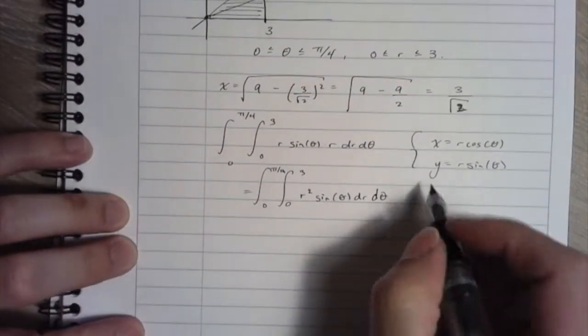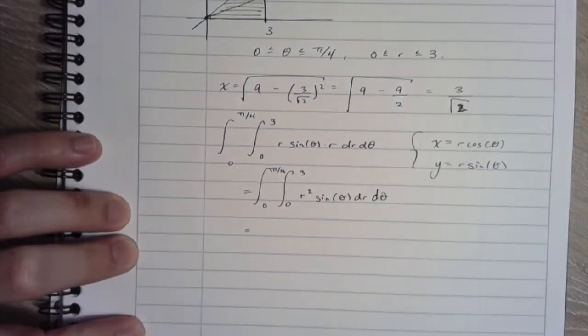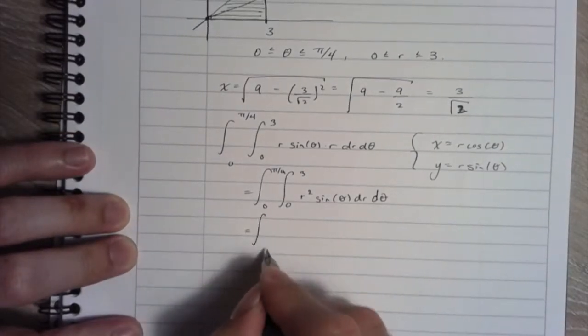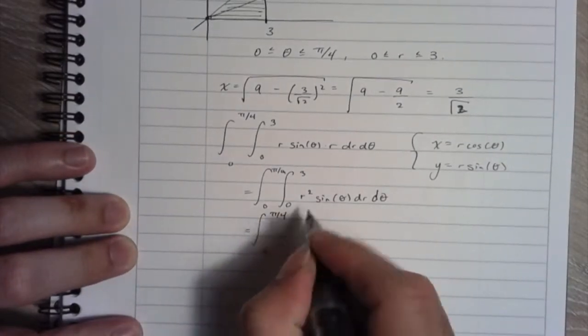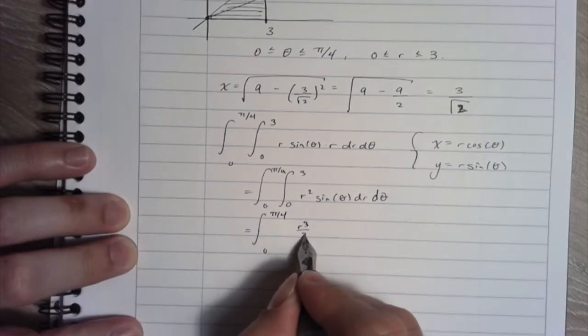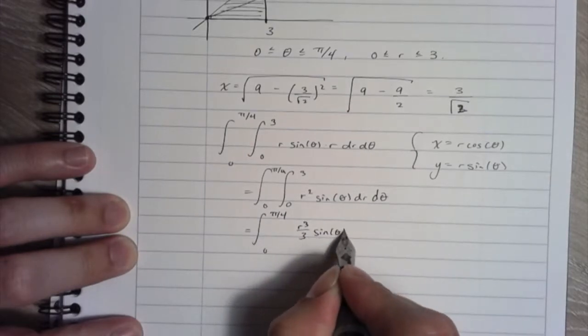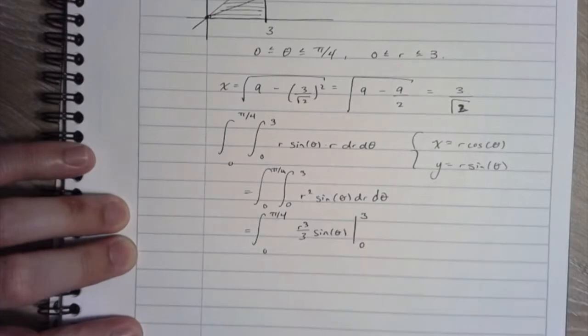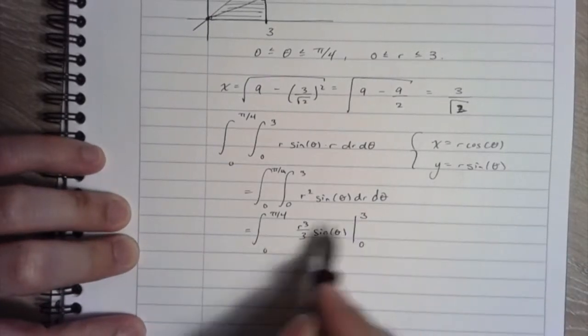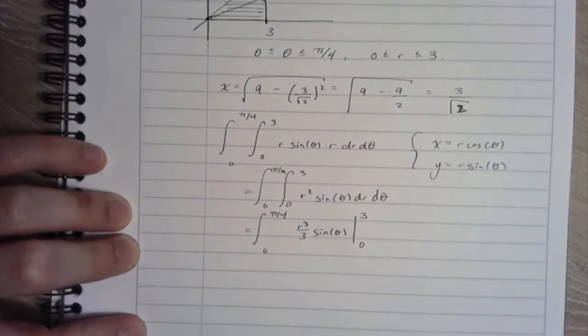Okay, so I integrate with respect to r. R cubed over 3 sine theta, and this is for r values between 0 and 3. So 3 cubed is 27 divided by 3 is going to be 9.